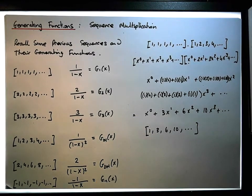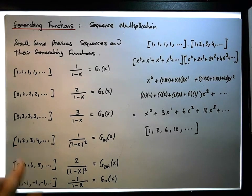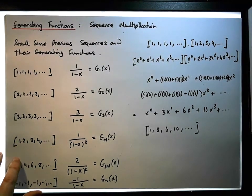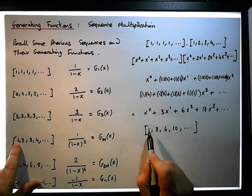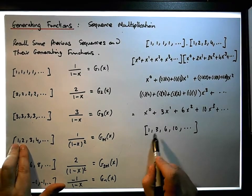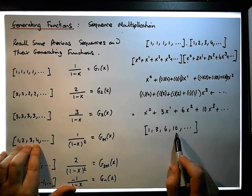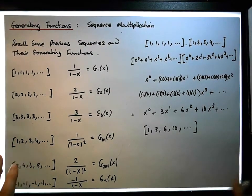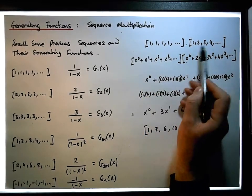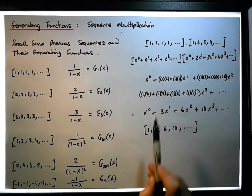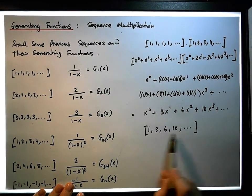This represents the sequence 1, 3, 6, 10... What is that? Well, this sequence comes from the natural numbers: if we do a running summation of the terms — the sum of the first term is one, the sum of the first two terms is three, the first three gives six, the first four gives ten. So multiplying a sequence by the constant sequence of ones is effectively the same as producing the partial summations of the terms in the sequence.